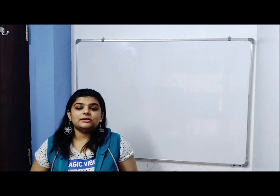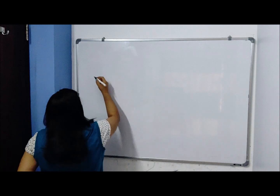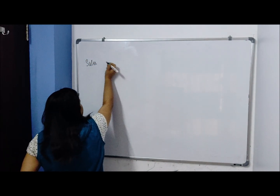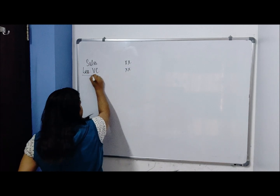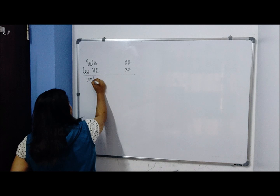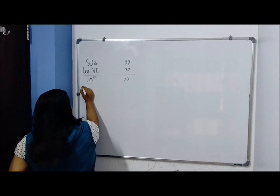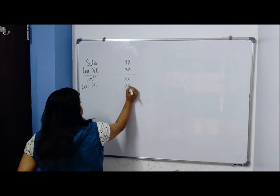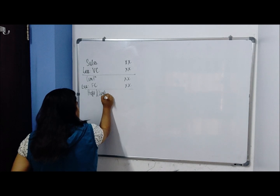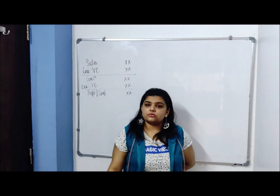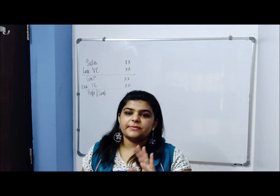Hello everyone, today we are going to learn the income statement under marginal costing. In my last video, I showed you the various formulas we use in marginal costing and the short form of the income statement. We learned: sales less variable cost gives contribution, less fixed cost gives profit or loss. We also learned various formulas of contribution, PV ratio, contribution to sales ratio, BEP, and margin of safety.